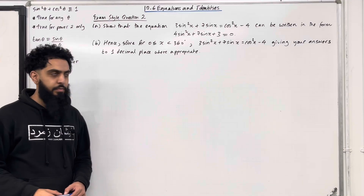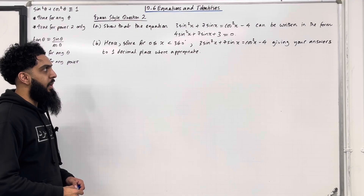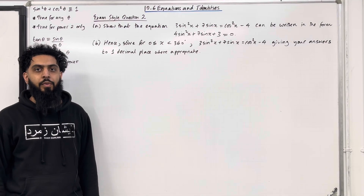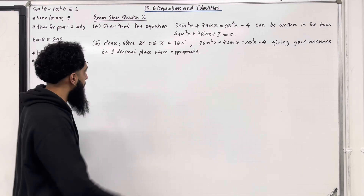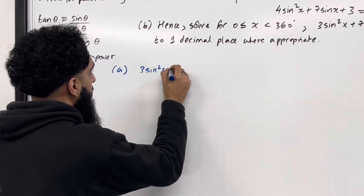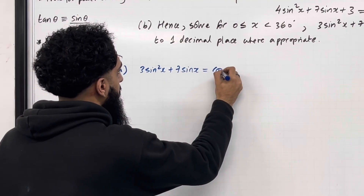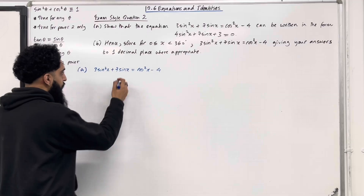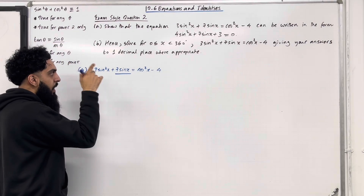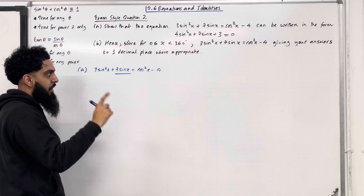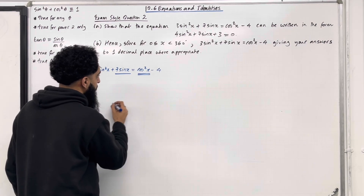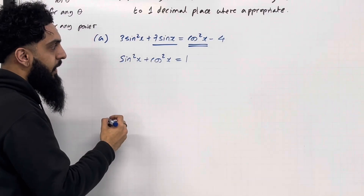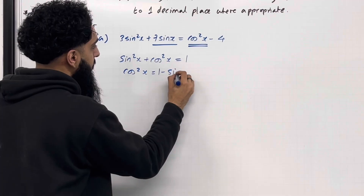Moving on to exam style question 2, Part A: show that the equation 3sin²x + 7sin x = cos²x − 4 can be written in the form 4sin²x + 7sin x + 3 = 0. The first step is to write down the trigonometric equation. The non-squared trigonometric term is 7sin x, indicating the equation must be expressed in terms of sine — so we need to eliminate cos²x.